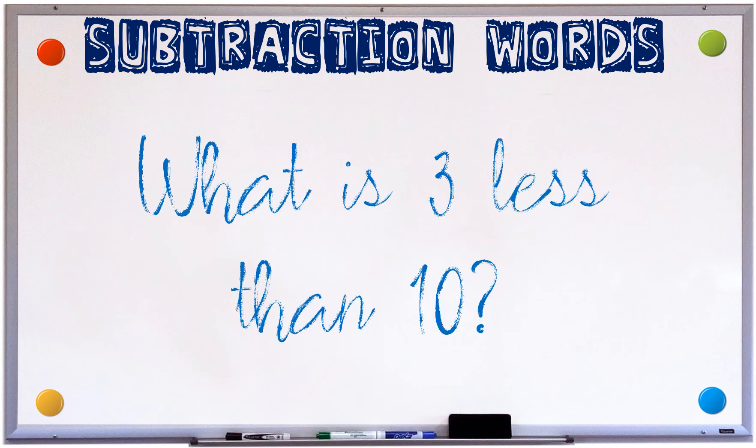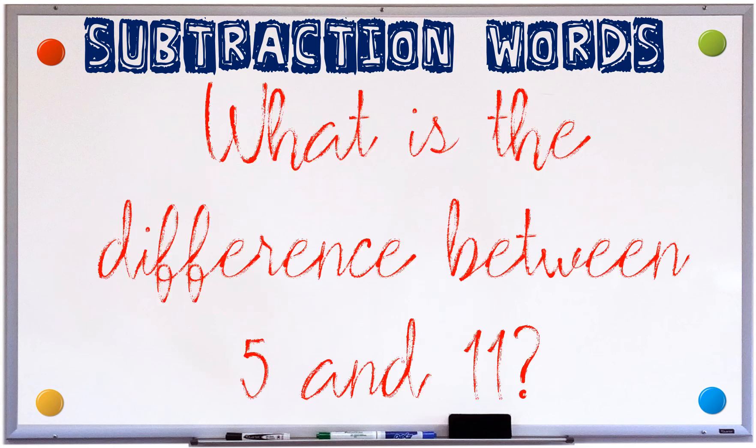What is 3 less than 10? We are subtracting 3 from 10, which is 7. What is the difference between 5 and 11? Again, difference is subtraction. The difference between 5 and 11 is 11 take away 5, which is 6.